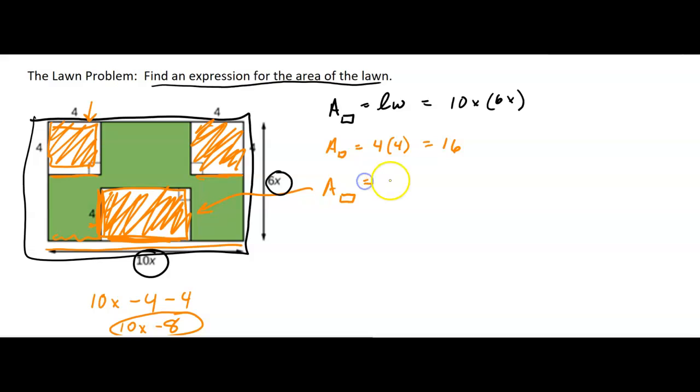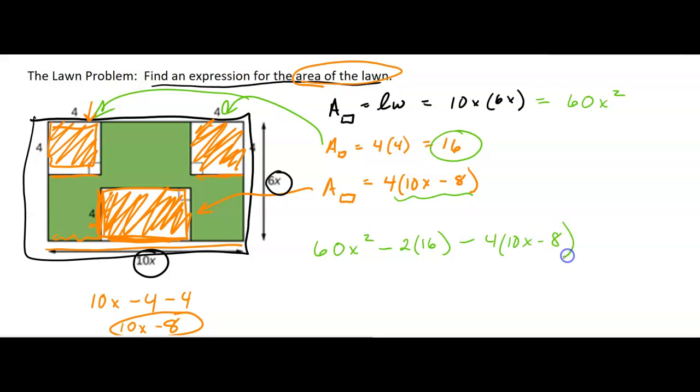So if we want an expression for the area of the lawn, the green area, it's going to be—well I didn't write this—60x² (right, 60x²) minus, and then we have two of those, so minus 2 times 16 because there was one here and one here, minus and then we have this rectangle, 4 times (10x - 8).